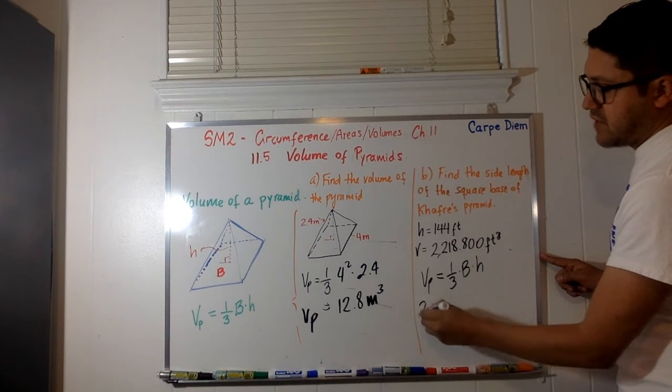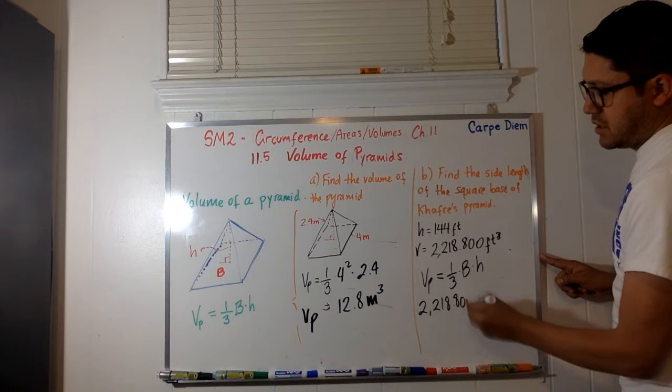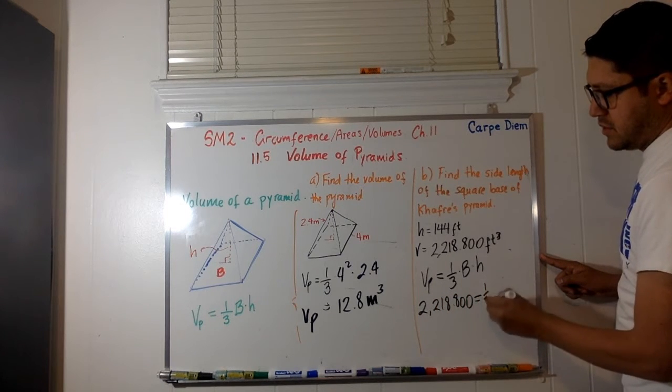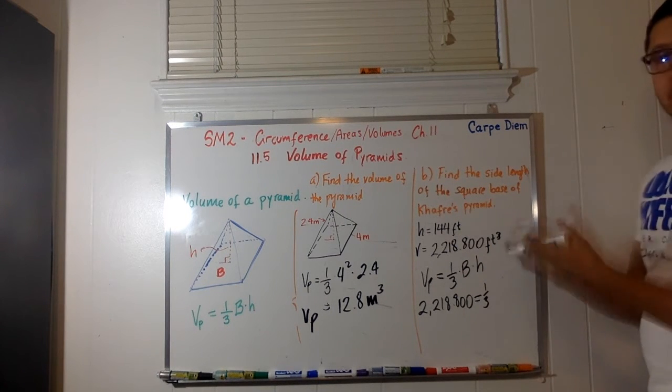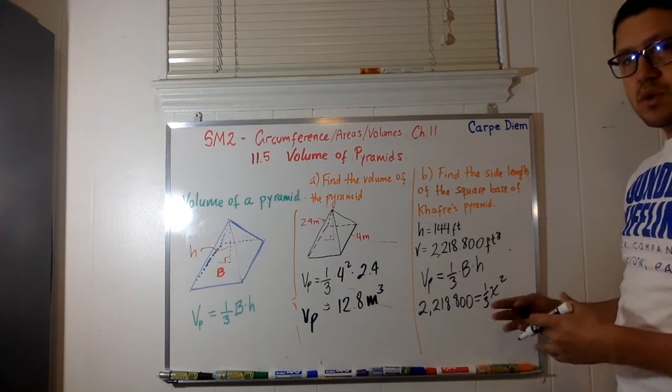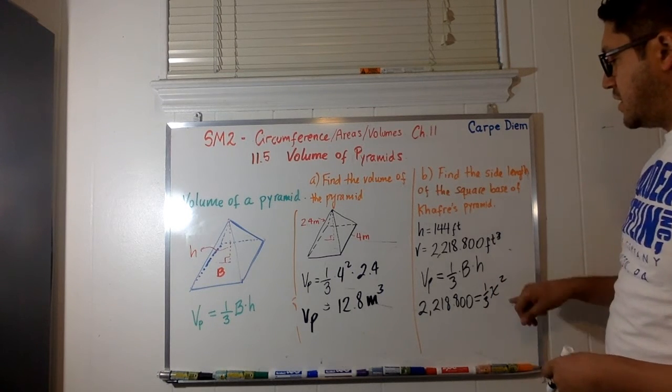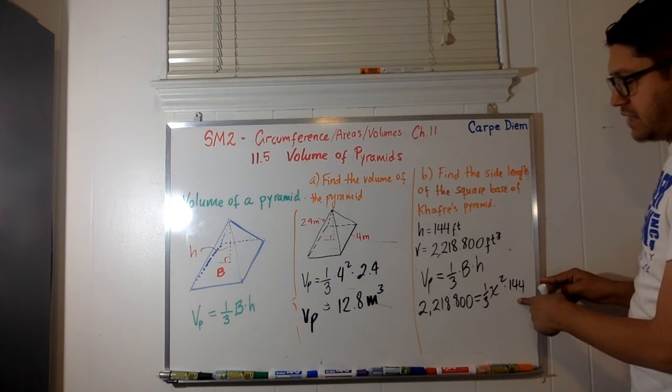In this case, we are given the value of the volume. We plug it in. We know that the base is a square, so we don't know it, so we're just going to keep it as x squared. And then, this is multiplied by that 144, which we do have. That is h.